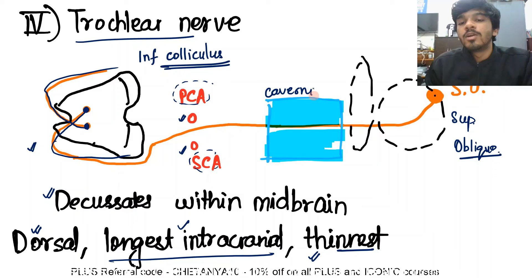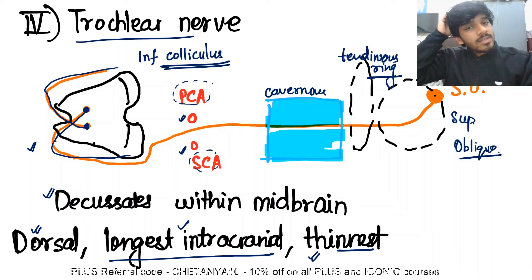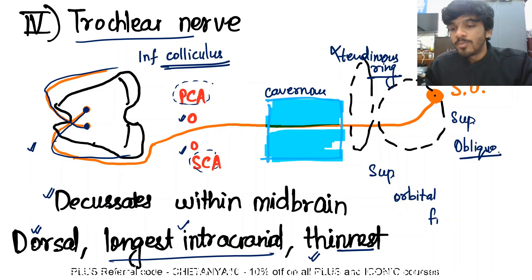The trochlear nerve also passes through the walls of the cavernous sinus. Importantly, it does NOT pass through the tendinous ring — it passes through the superior orbital fissure outside the tendinous ring. There are three structures that pass through the superior orbital fissure outside the tendinous ring, and the trochlear nerve is one of them.